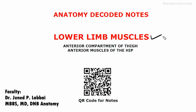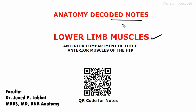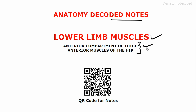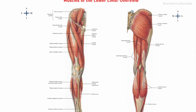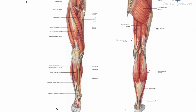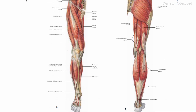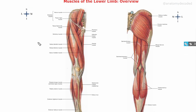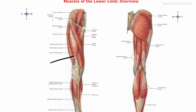Hello everyone. In this session we'll be starting with the lower limb muscles from the anatomy decoded notes. We'll be covering the anterior compartment of the thigh as well as the anterior muscles of the hip. This image shows the muscles of the entire lower limb in an anterior view as well as posterior view — the right-sided lower limb seen in anterior and posterior views.